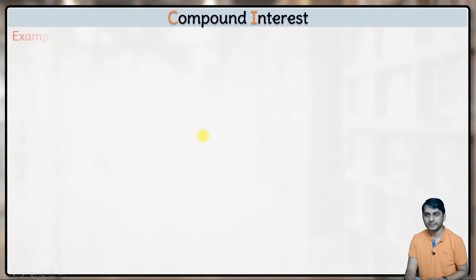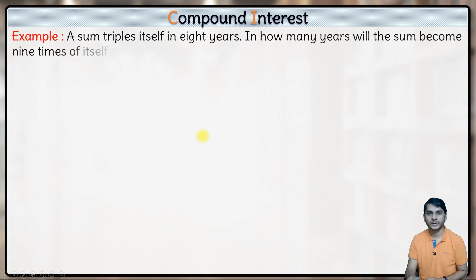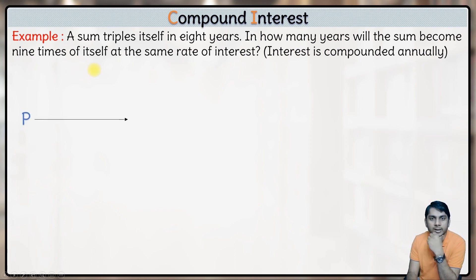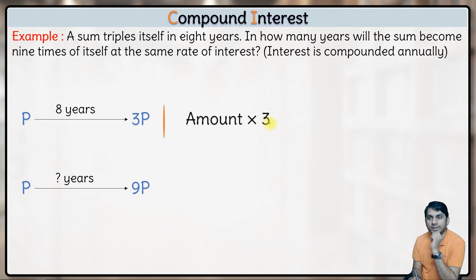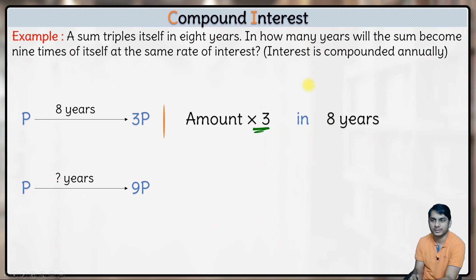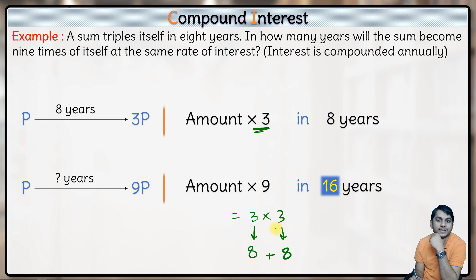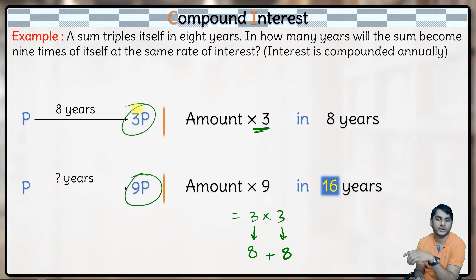Shortcut: A sum triples itself in 8 years. In how many years will it become 9 times? Amount becomes 3 times in 8 years. Since 9 = 3², we need the amount to triple twice. First tripling takes 8 years, second tripling takes another 8 years. Total = 16 years. Note: here we focus on the total amount, not the interest.